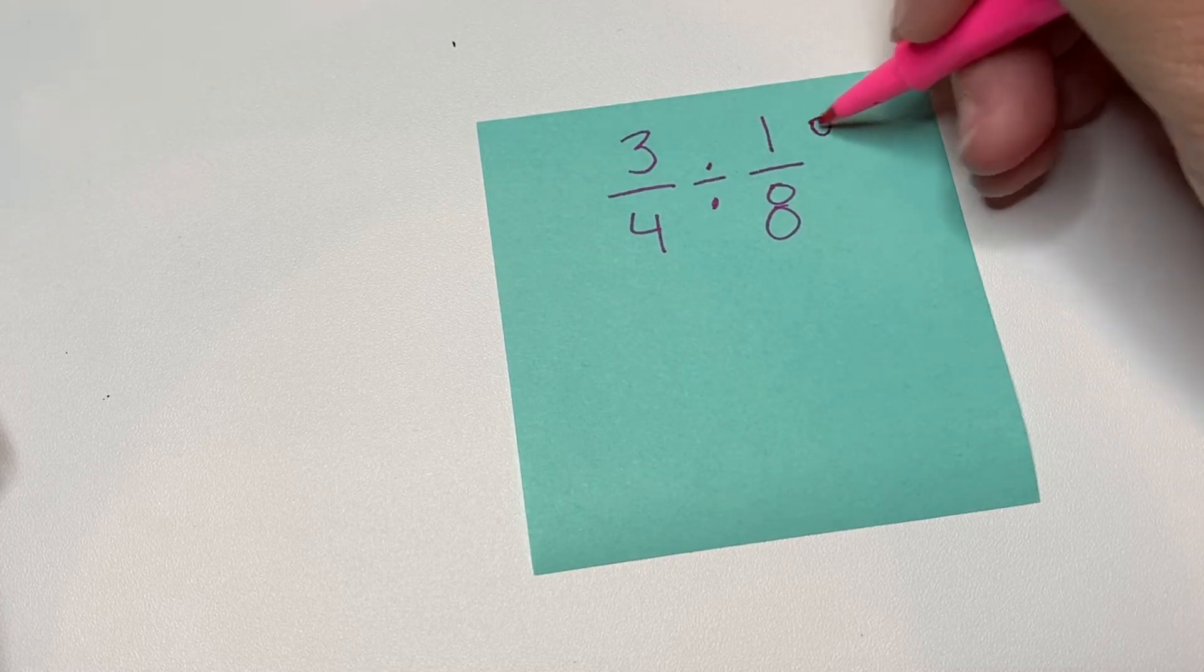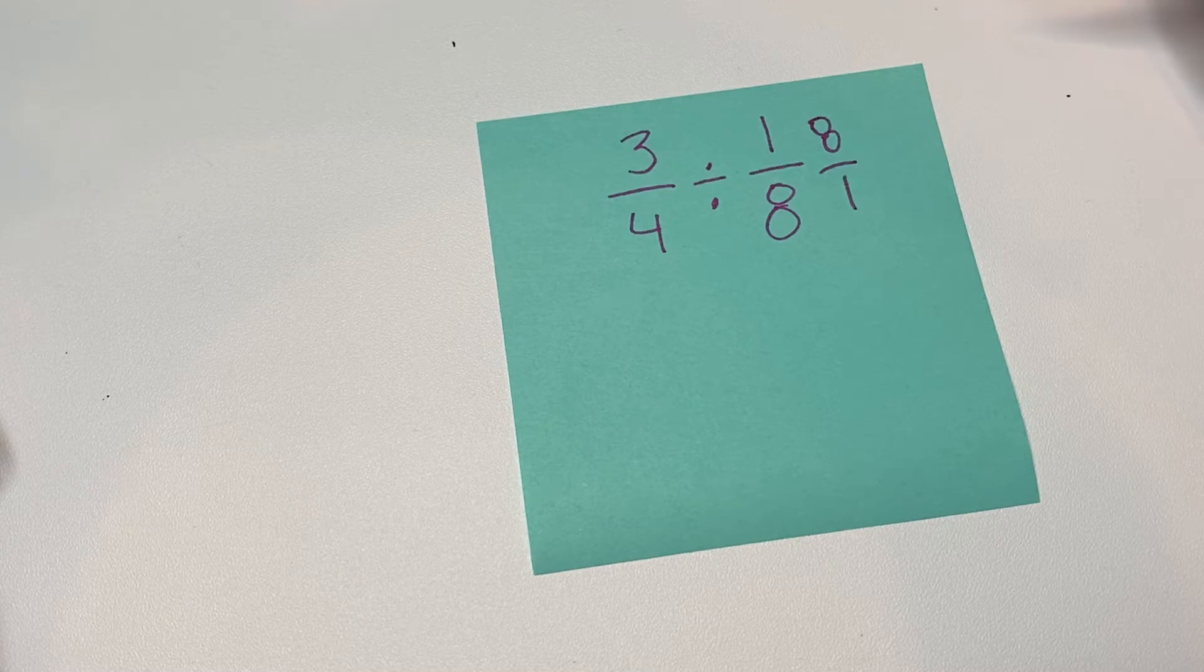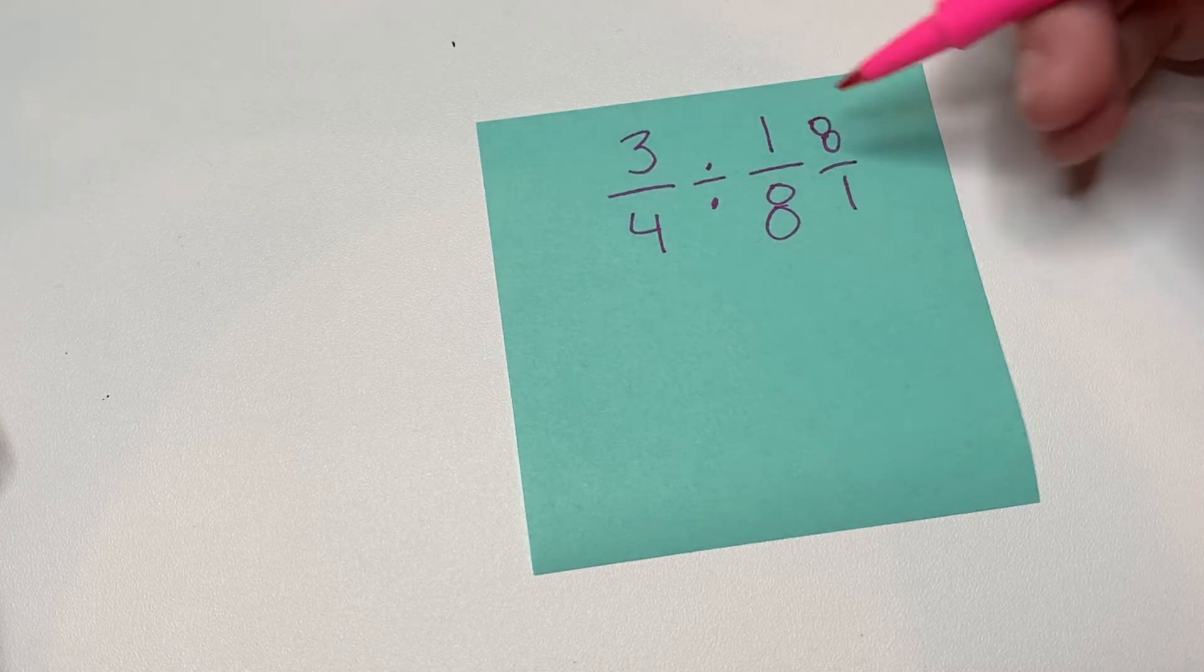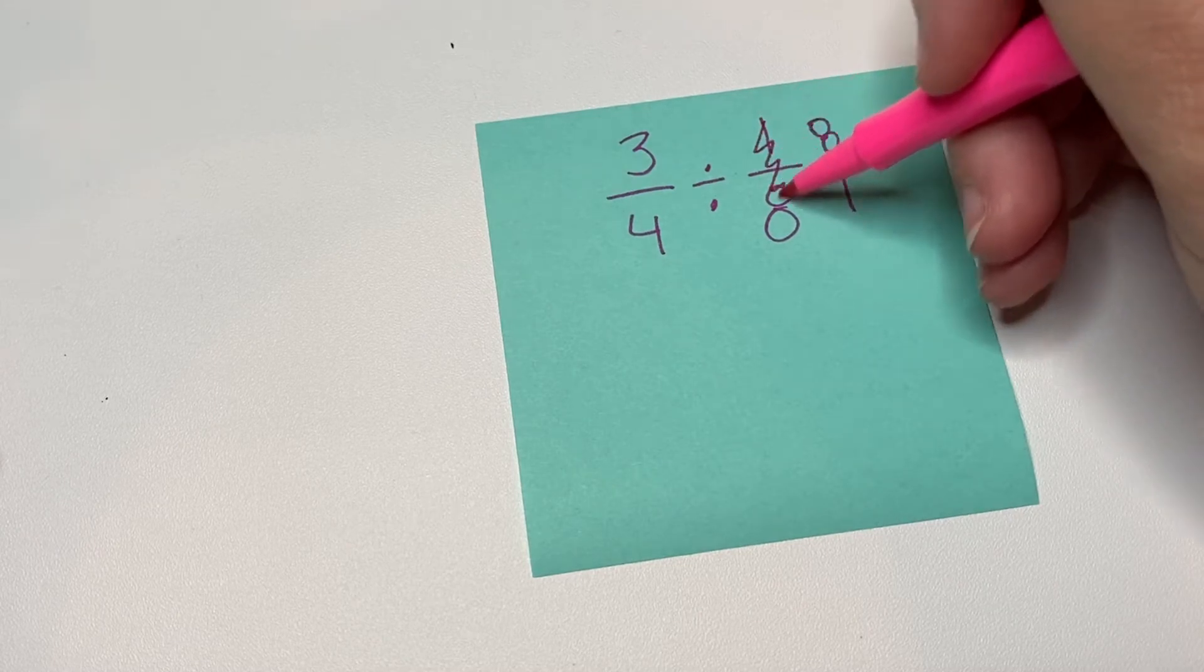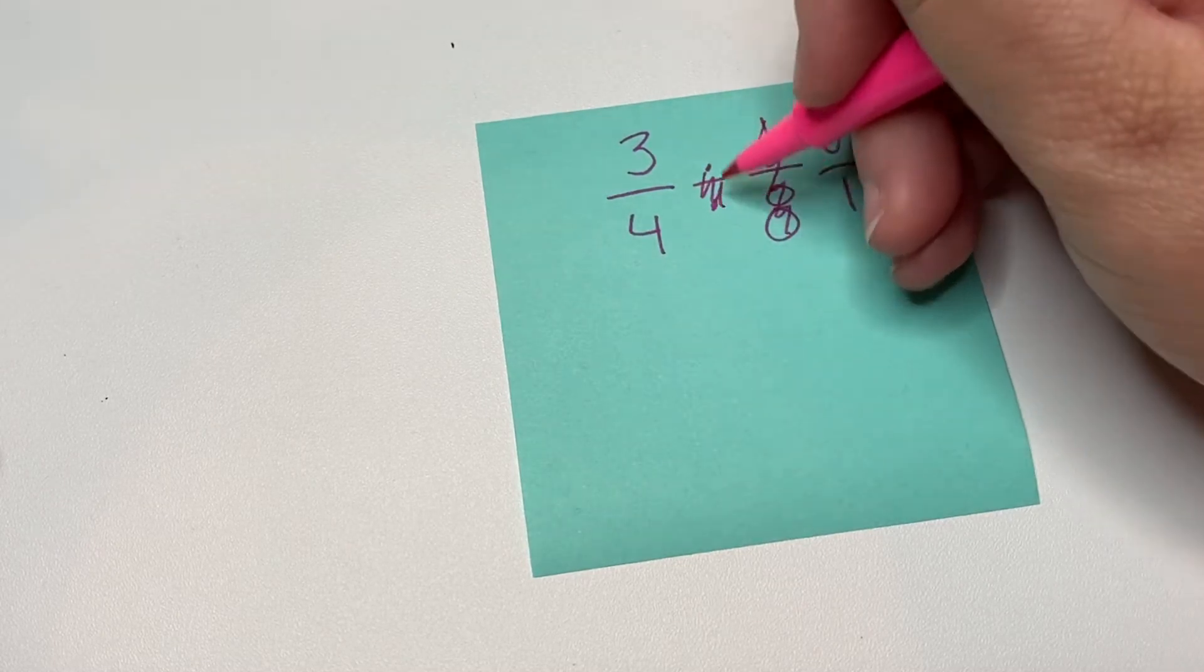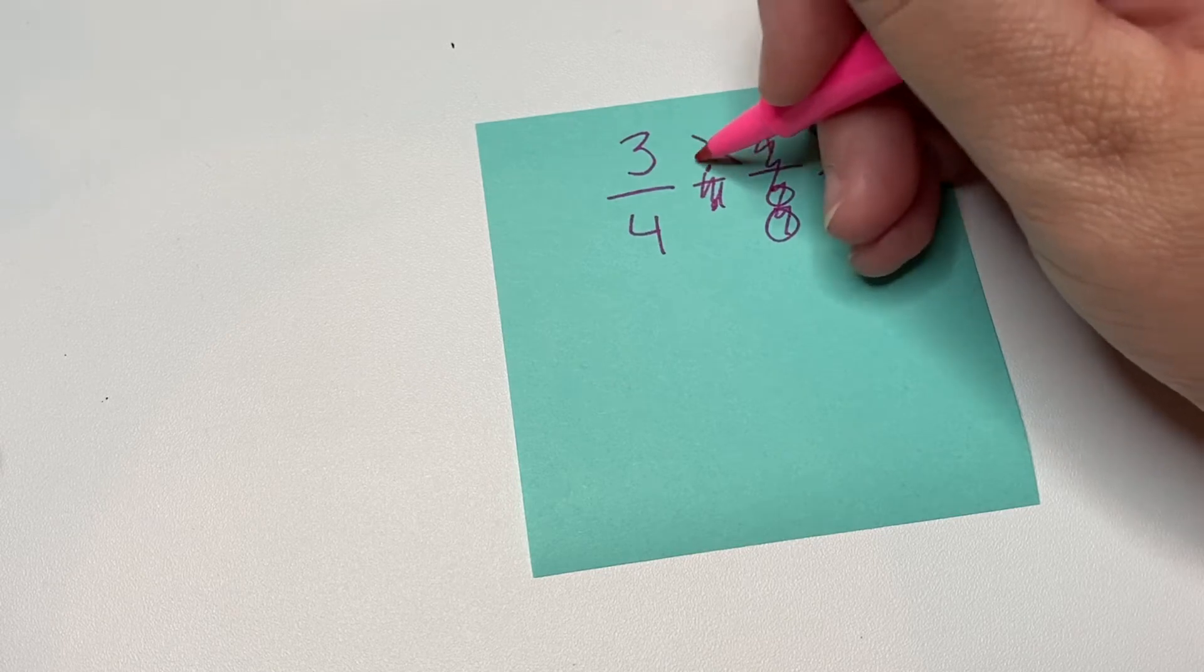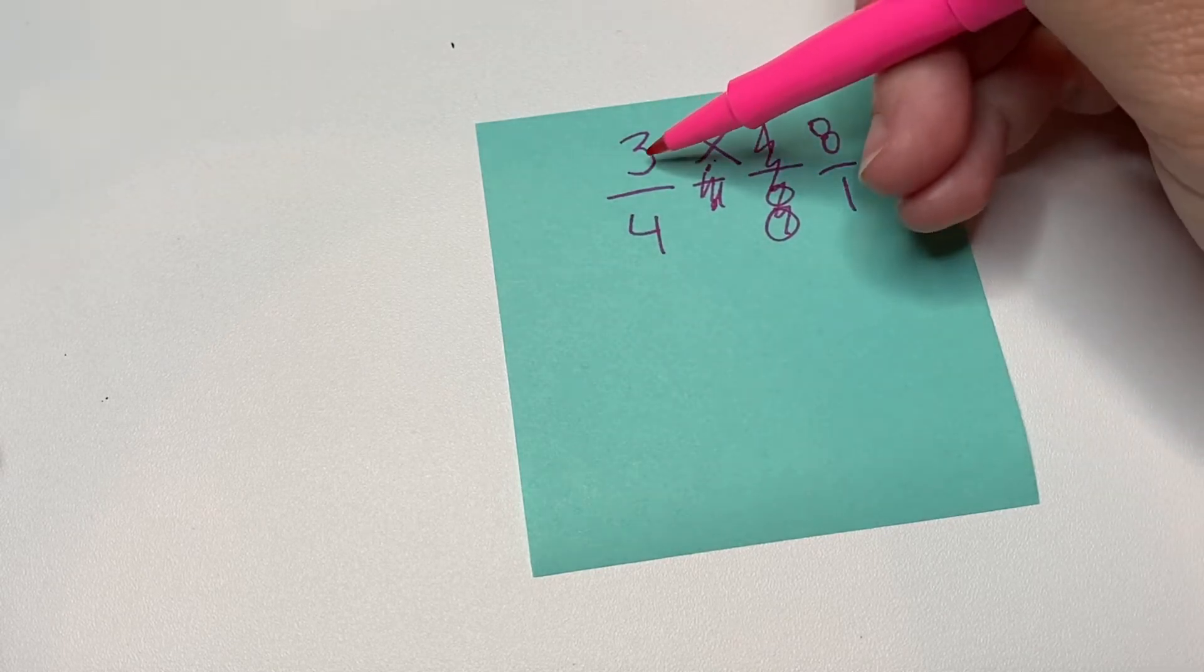So remember, when it's division, we're going to flip this to 8 over 1, that's the reciprocal or the inverse of it. We're going to cross this out and now this is going to be multiplying. So we're going to look to see if there's a way for us to cancel before we multiply.